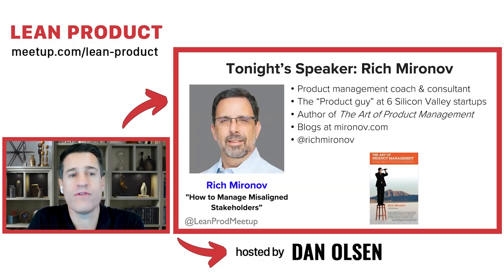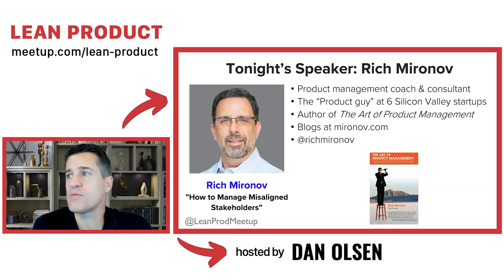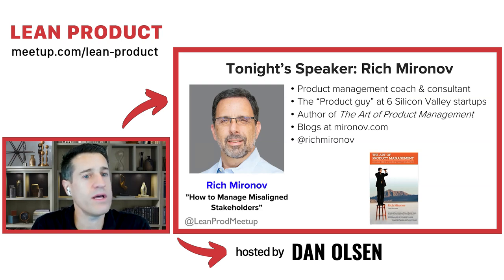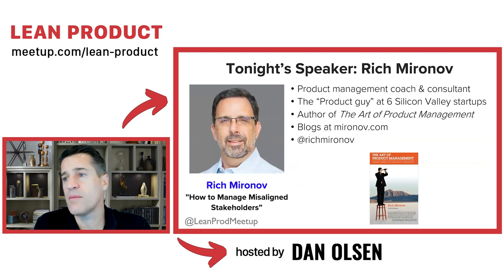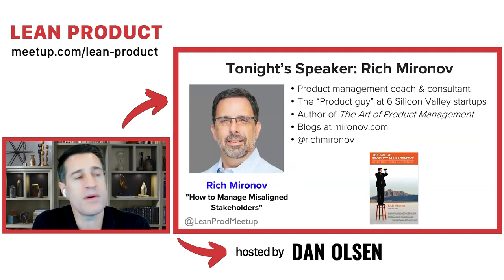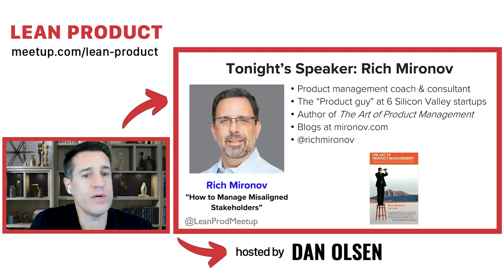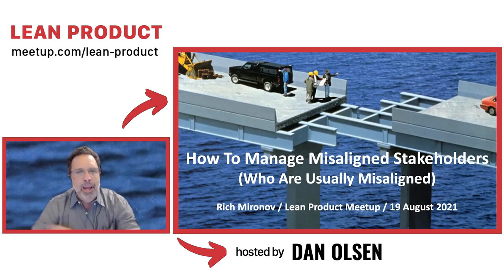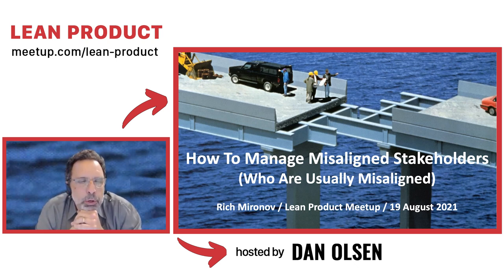Let's get to the reason we're all here tonight — to hear from Rich Miranov. I've been happy to know Rich for a while now. He's a product management coach and consultant, the product guy at six Silicon Valley startups, author of 'The Art of Product Management,' one of the earliest books in product management. You can check out his blog at miranov.com and his Twitter handle is at Rich Miranov. He's going to share advice on how to manage misaligned stakeholders.